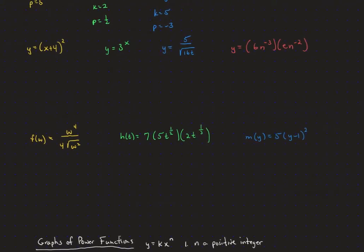On the x plus 4 to the second, if you multiply that out, we're going to get the first one squared plus twice the product plus the second one squared, and again, there aren't any pluses or minuses in a power function. So no, that is not just y equals kx to the p. And y equals 3 to the x is known as an exponential — it is not a constant times a power of x, so it is also not a power function.